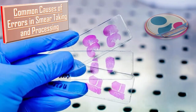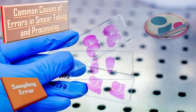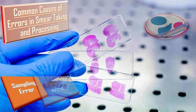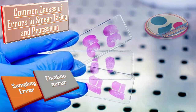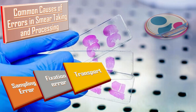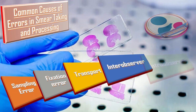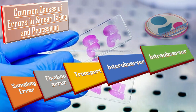What are the common causes of errors in smear taking and processing? Those may include first of all the sampling error, or the fixation error — the slide should not be air dried. Thirdly, there might be error in transportation of the pap smear slide. There might also be inter-observer or intra-observer errors. So the results are not 100% accurate.